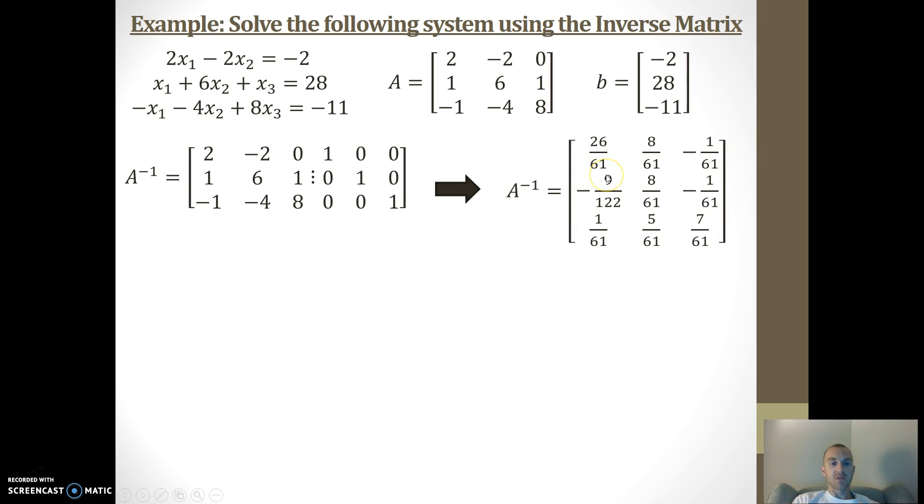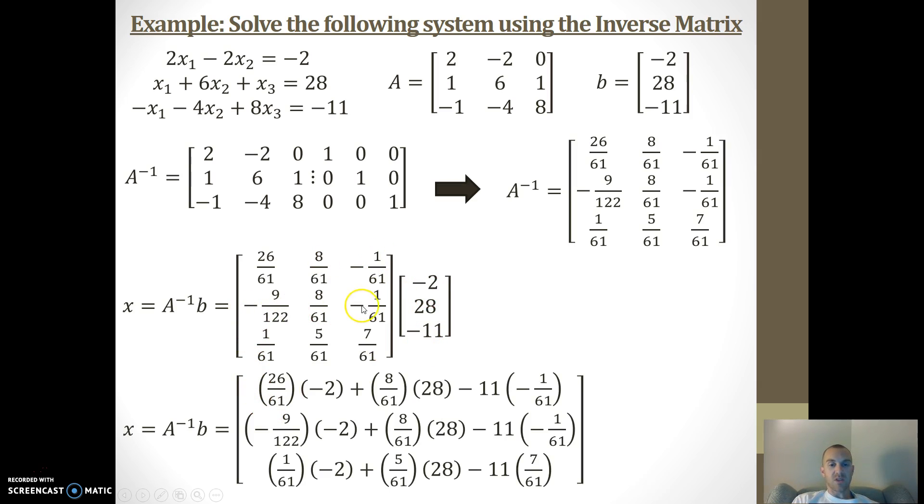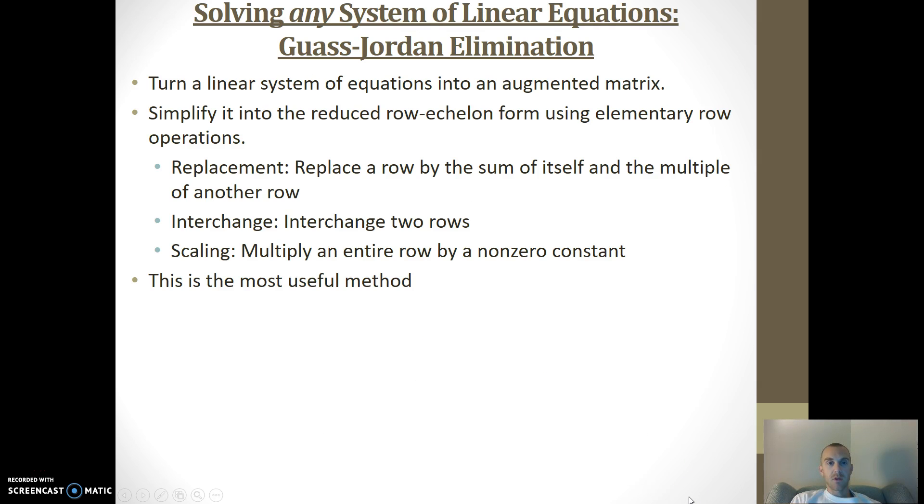Now I'm going to take my inverse matrix, and I'm going to multiply it by my B matrix. And if I think about, well, how do I multiply? I'm going to take my row, multiply it by my column. Take this row, second row, multiply it by the column. Take my third row, multiply it by the column, and then simplify each of these rows. Now, I get, again, these look like fractions, but let's see what happens when they simplify. And if I simplify it, I get 3, 4, and 1, which means x1 is 3, x2 is 4, x3 is 1.